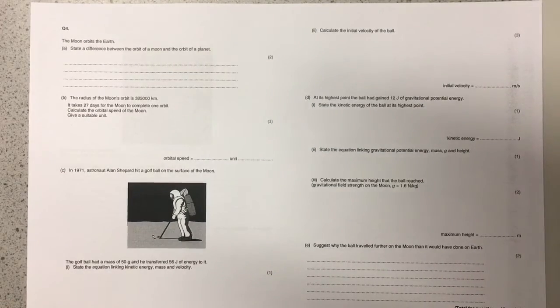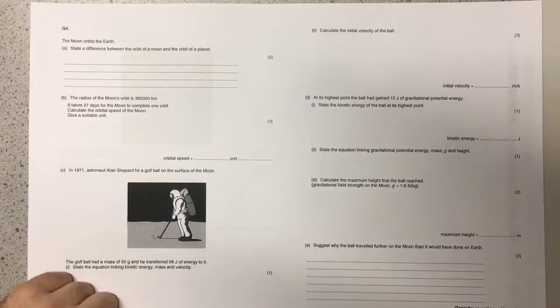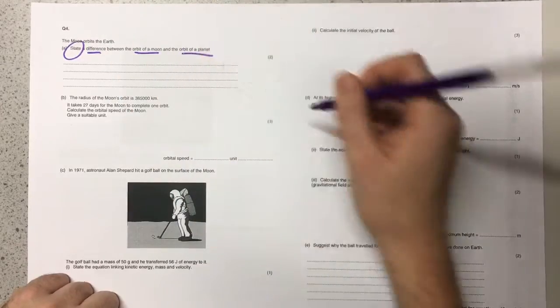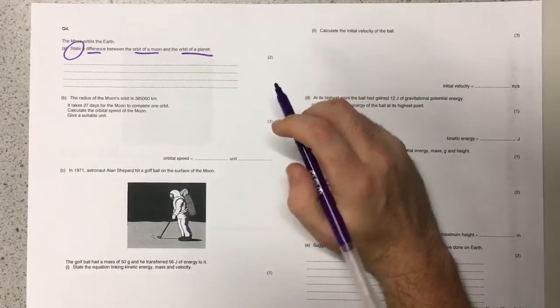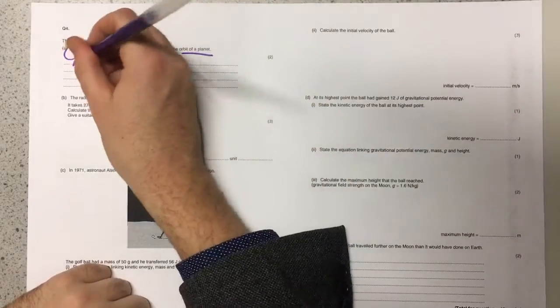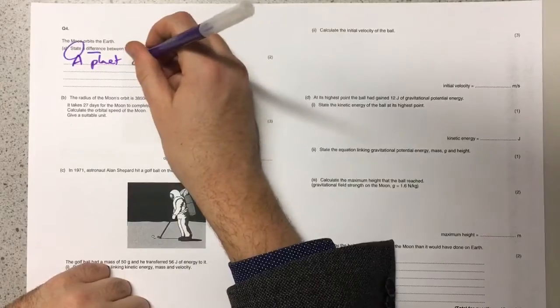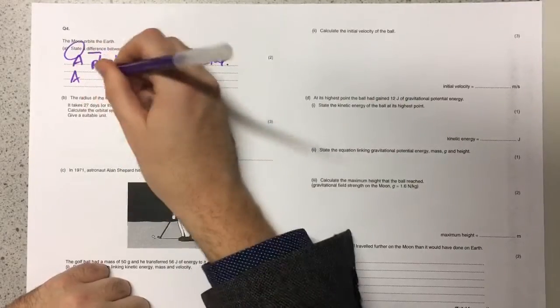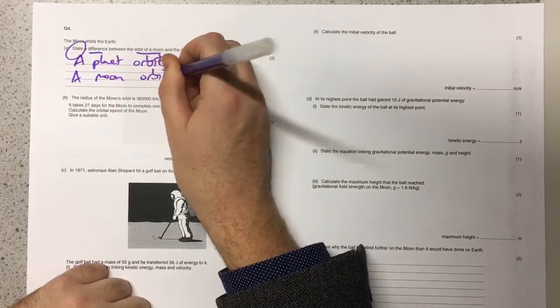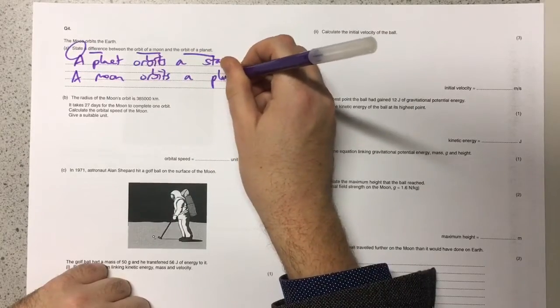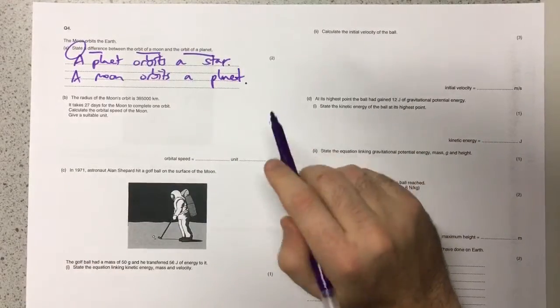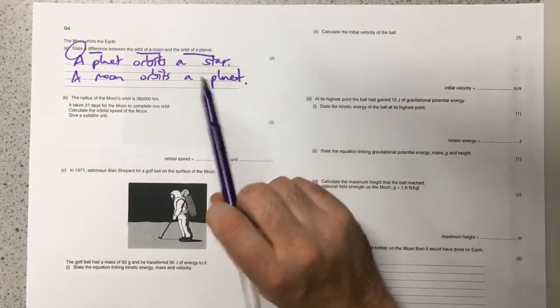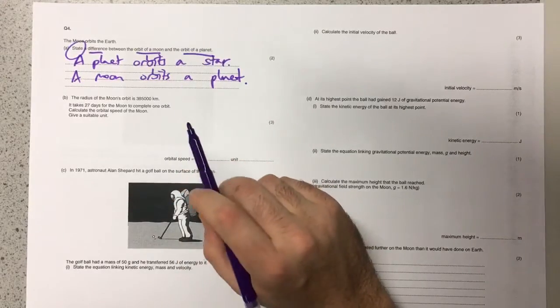This question is about energy and the moon. It says that the moon orbits the Earth and asks us to state a difference between the orbit of a moon and the orbit of a planet. Really, this is what defines a planet and what defines a moon. A planet like Earth orbits a star like our Sun, whereas a moon orbits a planet. That's what they want you to do. They don't want you to get into any discussion about the shape of the orbit because moons and planets have quite similar shapes.